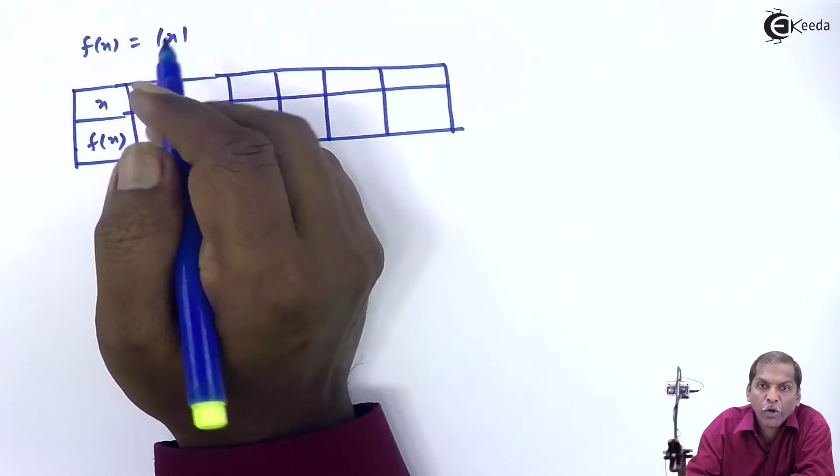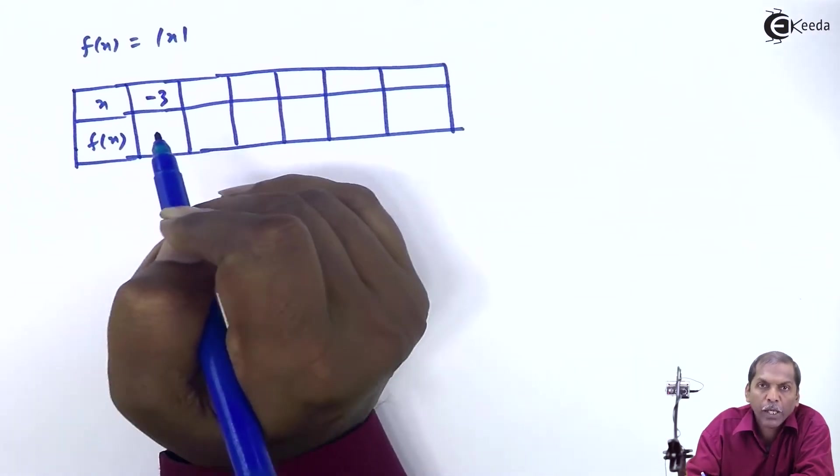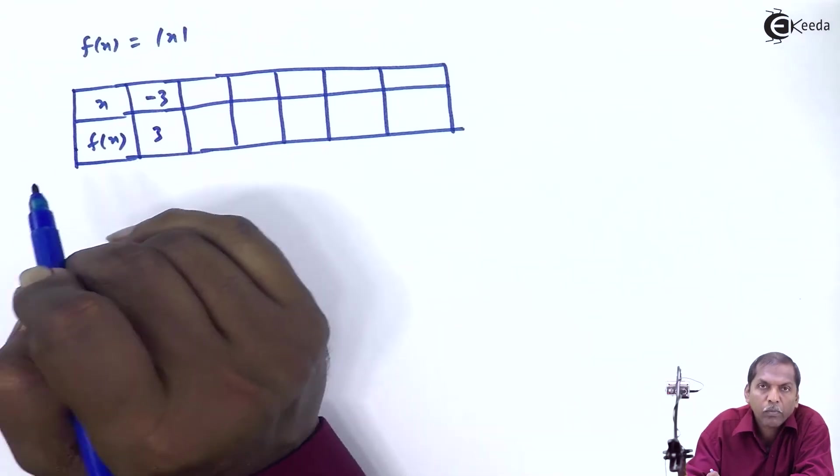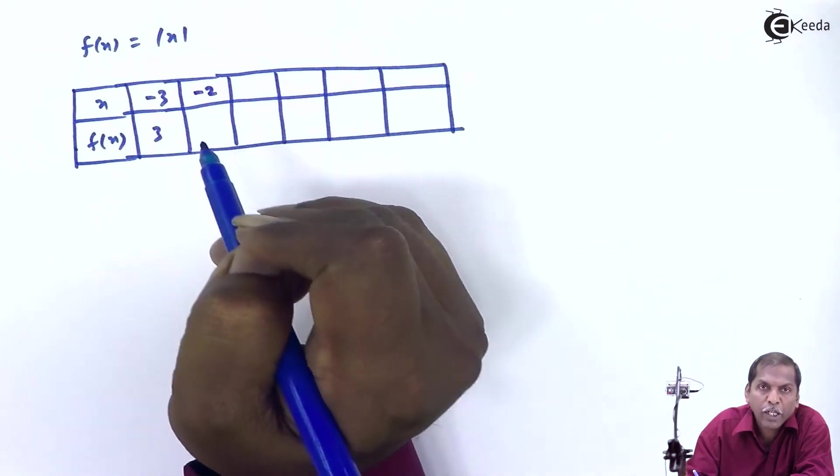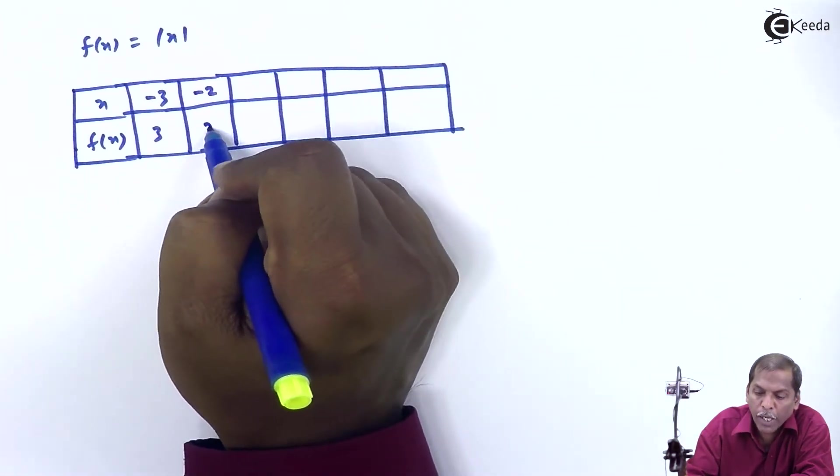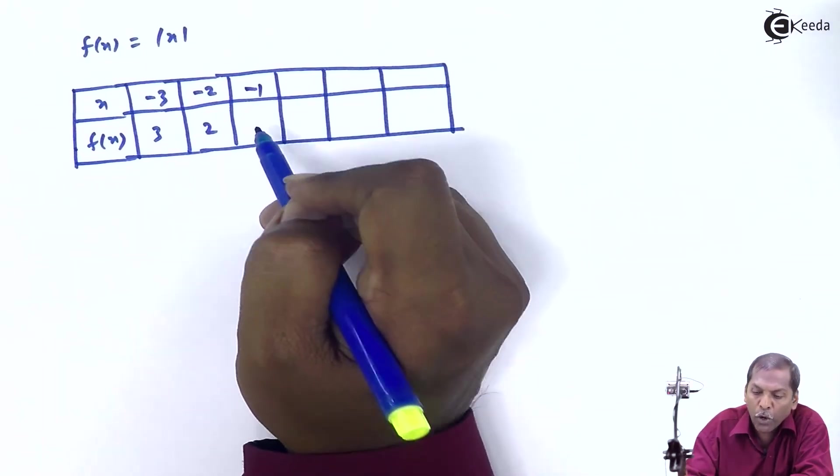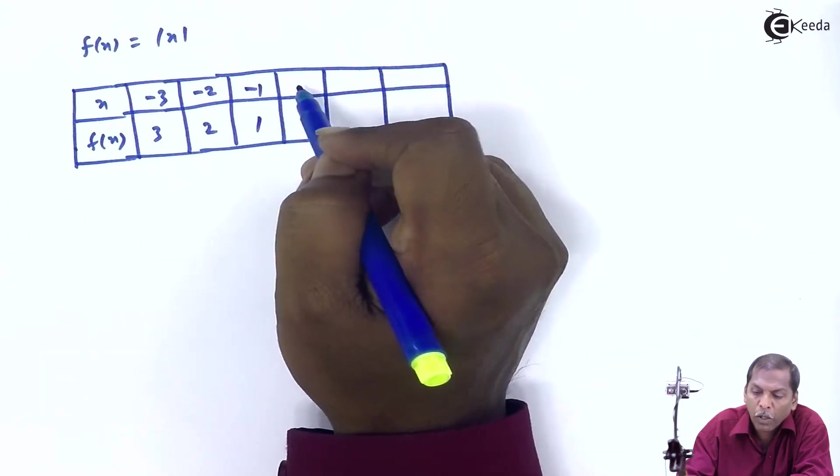First x value is minus 3, so modulus of minus 3 is plus 3. Next value minus 2, modulus is plus 2. Next value minus 1, modulus is plus 1.